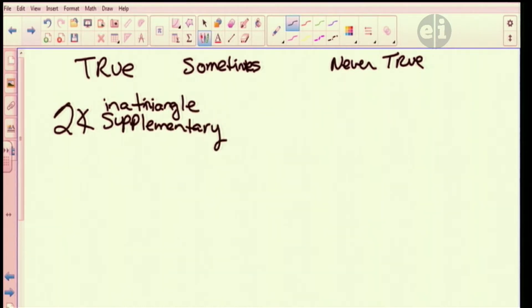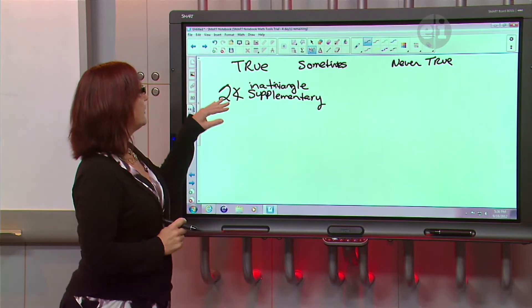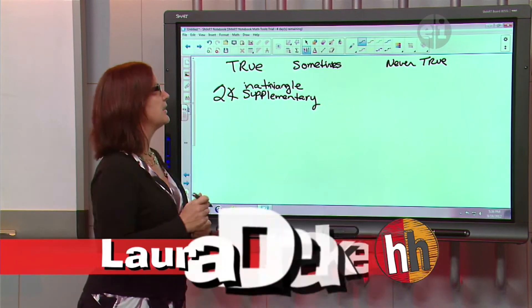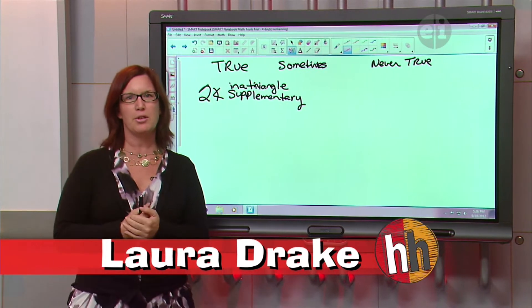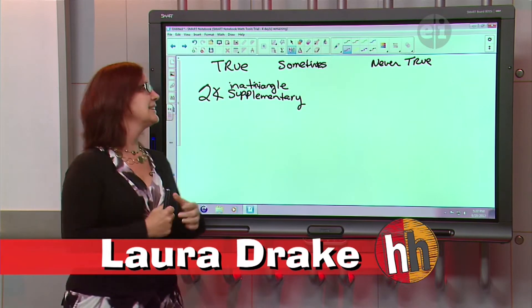That's the only thing. It's asking us if it's true, never true, or sometimes true. Okay, great. So we have two angles in a triangle are supplementary. So the big thing we need to think about here is the vocabulary. They're really asking you a vocabulary question and your knowledge of triangles. So the vocabulary word here is?